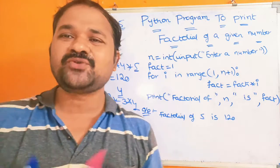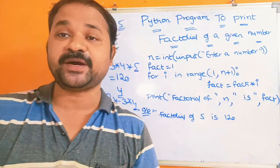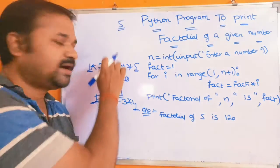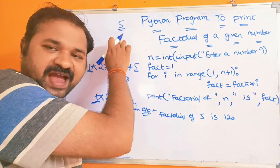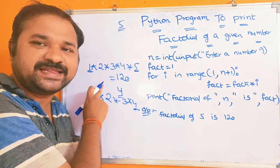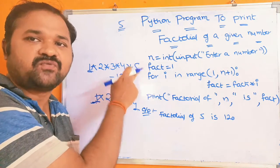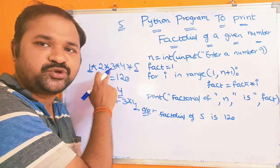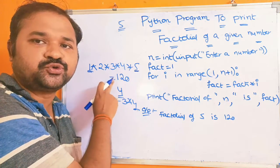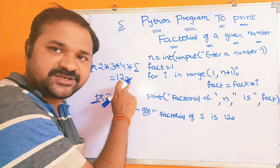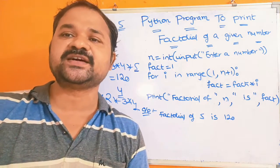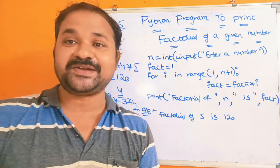We know how to calculate the factorial of a number. Let the number be 5. Then in order to calculate factorial of 5, we have to multiply the numbers from 1 to 5. So, 1 × 2 × 3 × 4 × 5: 1×2=2, 2×3=6, 6×4=24, 24×5=120. So, 120 is the result of 5 factorial.